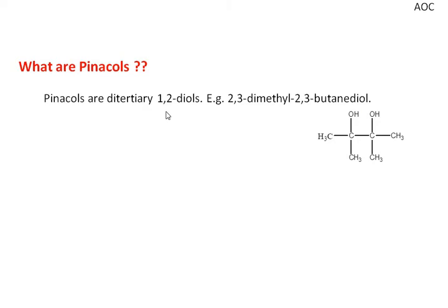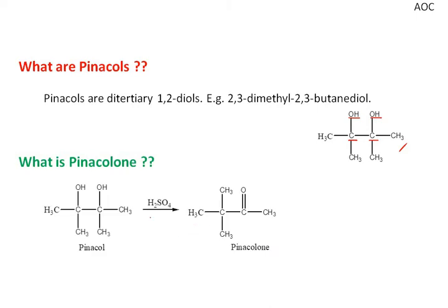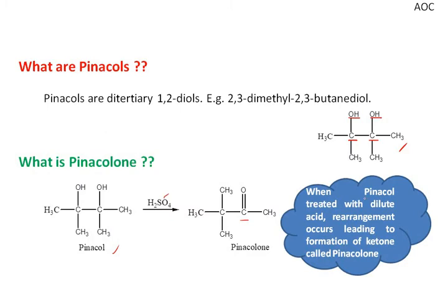First of all, let us know what a pinacol is. A pinacol is any molecule with adjacent carbons having an OH group attached to them. Here you can see that the adjacent carbons have an OH group attached — this is one example. And what is a pinacolone? A pinacolone is formed when a pinacol is treated with a dilute or less concentrated acid, so one of the carbons gets converted to a carbonyl group and there is some rearrangement occurring.